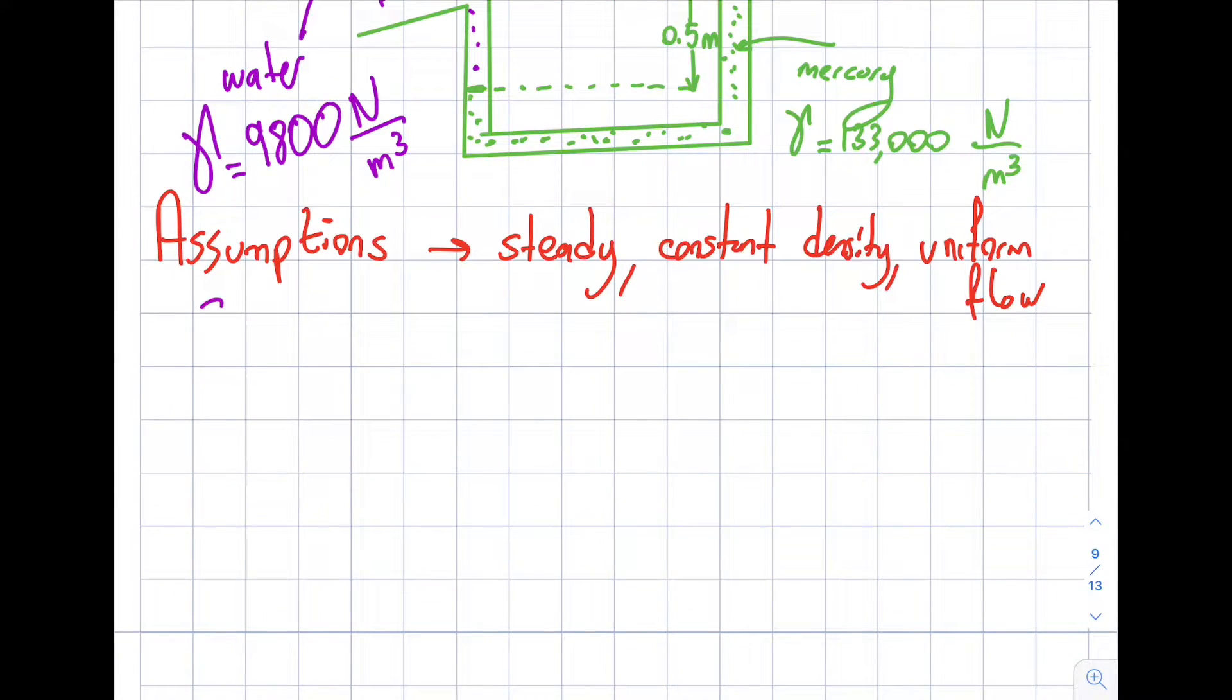Let's write here conservation of mass. But this time around it's fairly easy. V1 A1 is equal to V2 A2 with those three assumptions. And my V1 is given as 2 meter per second. A1 is given as pi over 4, the diameter is 4 centimeters, so it's going to be 4 times 10 to the minus 2 square.